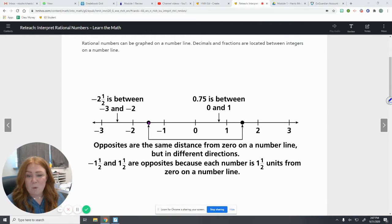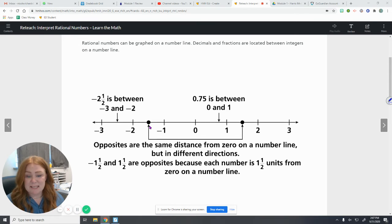We have the number negative 1½ and 1½. They're both 1½ units from 0. One's positive, one's negative. Those are opposites.